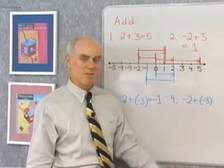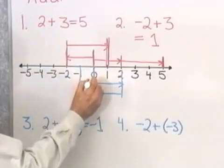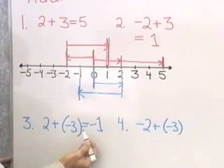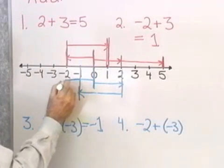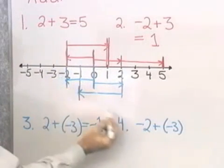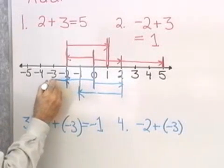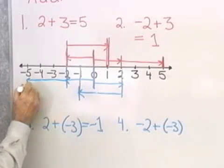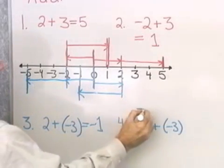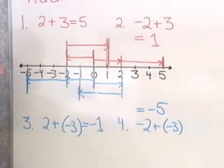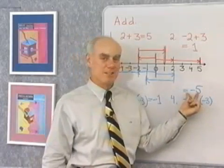So, where do you think negative 2 plus negative 3 is going to end up? That's right — at negative 5. Here's the origin where I start. I move 2 units in the negative direction: 1, 2. That brings me to this point. Then I move 3 more units in the negative direction: 1, 2, 3. Sure enough, I end up at negative 5, and that's why the answer to negative 2 plus negative 3 is negative 5.